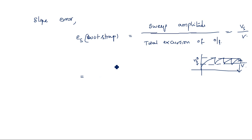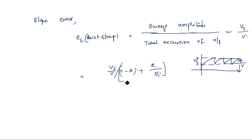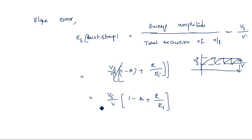The slope error es equals Vs by V, which works out to (1 minus A plus R by Ri) times Vs by V. That is, es equals Vs divided by V times (1 minus A plus R by Ri). This is the slope error for the bootstrap sweep circuit.